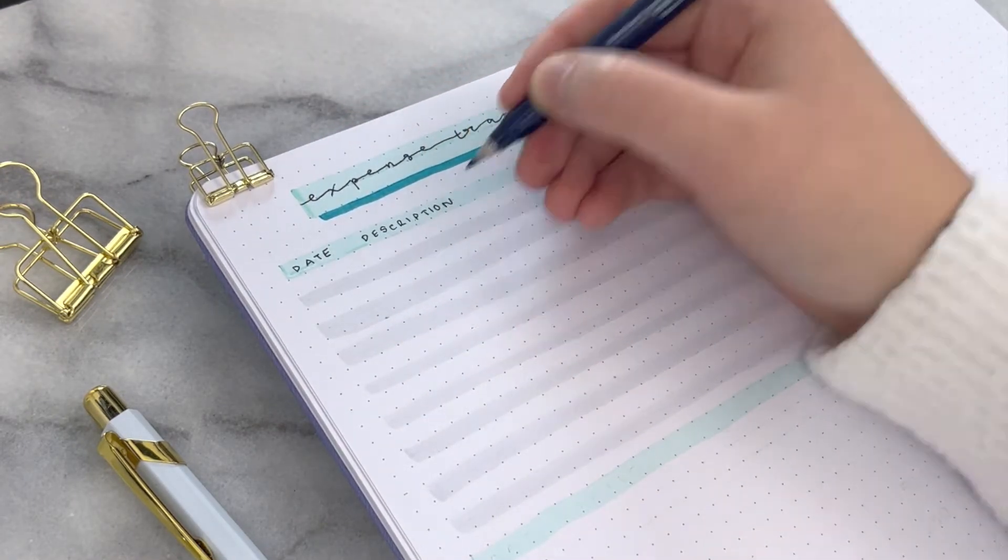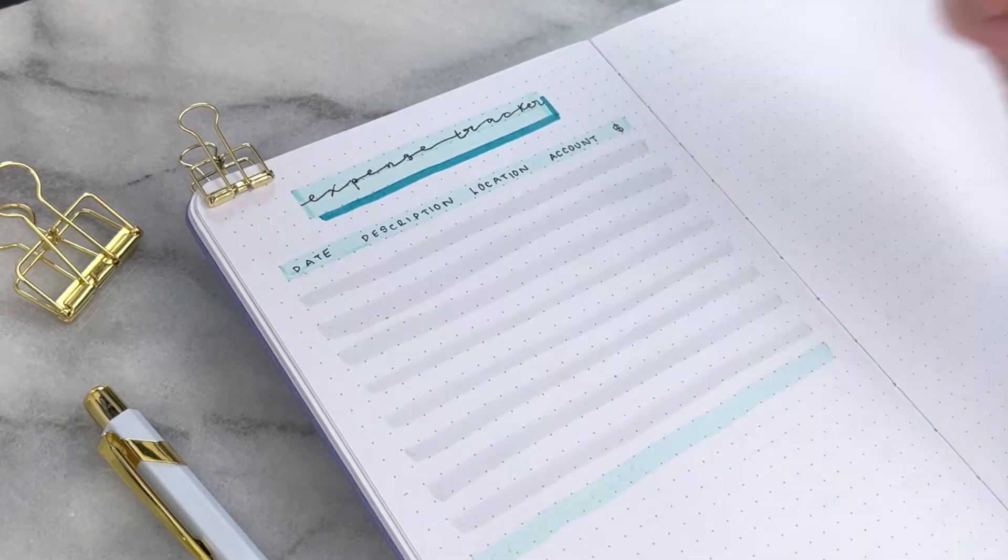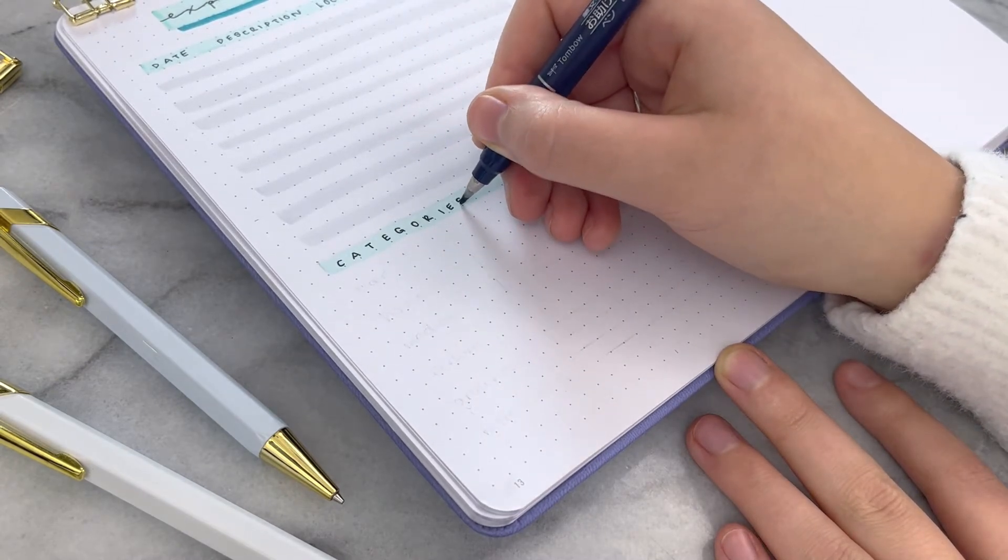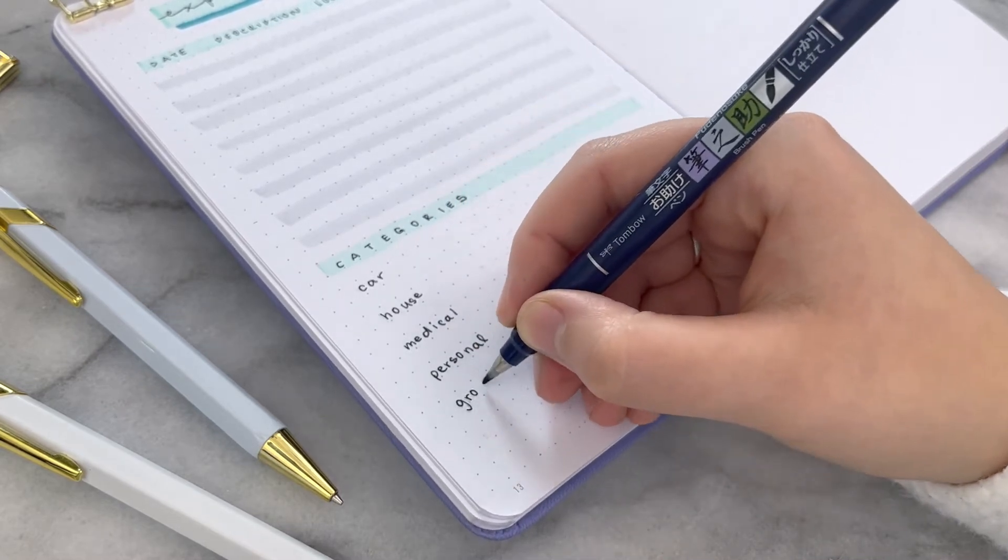How I've sectioned this off here is date, description, location, amount, and then the account that is coming out of. And at the bottom, I'm breaking down different categories that my money could come out of. Car, home, medical, personal, groceries, and miscellaneous.